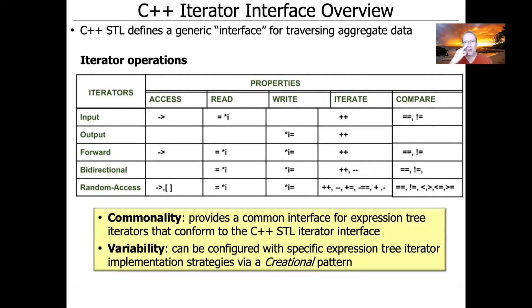From a commonality and variability point of view, which is very important for our systematic reuse efforts, we can think about the iterator interface in C++ STL as giving us a common means to define iteration using the STL syntax. And then from a variability point of view, we can create or instantiate this for a specific context with our traversal of the expression tree using different implementation strategies, using a creational pattern. We'll talk about the implementation strategies in more detail in the next discussion on the strategy pattern. But for right now, we're just focusing on the concept of iteration in general.